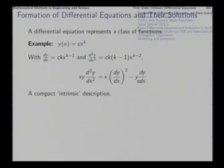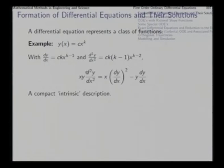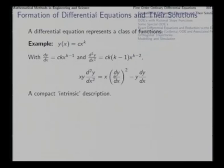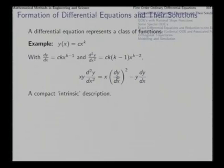This gives a relationship between x, y, dy/dx, and d²y/dx², in which all parameters c and k have been eliminated. This is a compact, intrinsic description of the relationship between y and x. The other quantities entering the equation are derivatives of the same function y. This means that when you solve the differential equation, you will get back the constants c and k. Sometimes while solving you might find some other solutions not incorporated here.